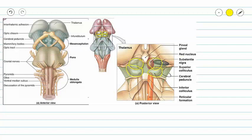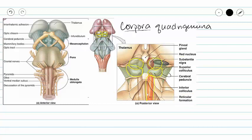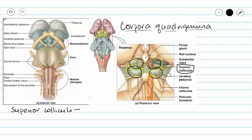We can also see a portion of the reticular formation in the mesencephalon. We call these four structures the corpora quadrigemina — corpora means body, quad means four, and gem means stump. The superior colliculi function in visual attention, tracking objects with your eyes, reflex movements such as blinking, focusing, pupillary dilation and constriction, and orientation.